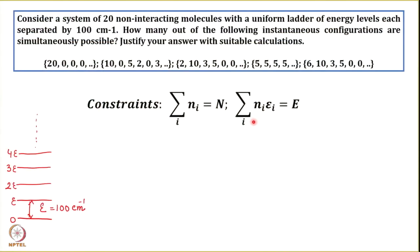The second constraint is that the total energy — summation of n_i times E_i — must equal the total energy of the system. Both constraints must be followed. Let us now work through each configuration. For the first, (20, 0, 0, 0, 0): 20 + 0 + 0 + 0 + 0 = 20, satisfied. For the second, (10, 0, 5, 2, 0, 3): 10 + 5 + 2 + 3 = 20, also satisfied.